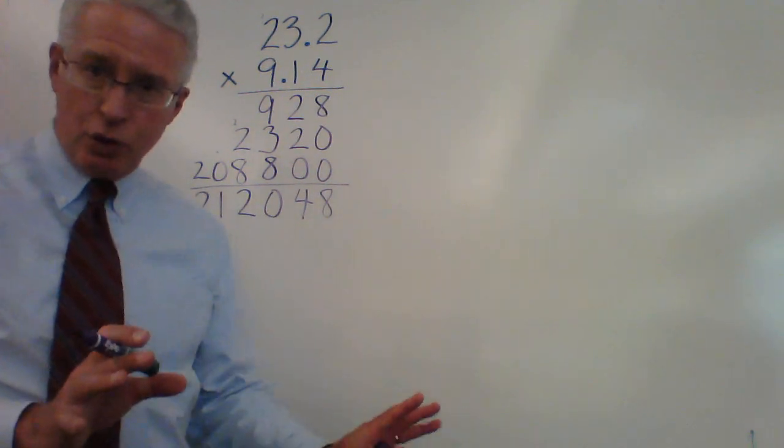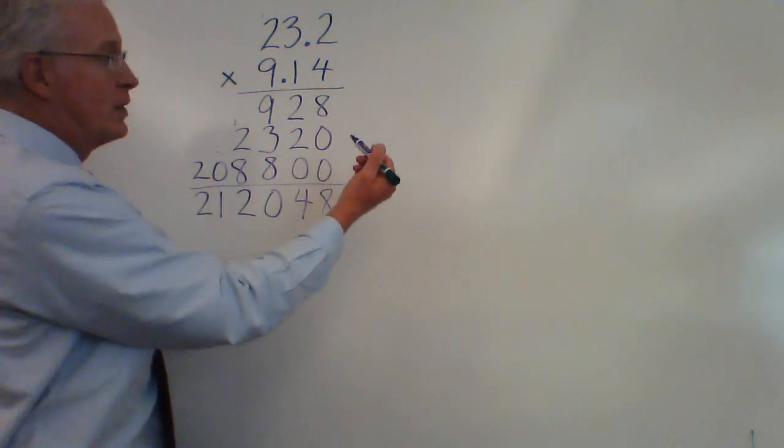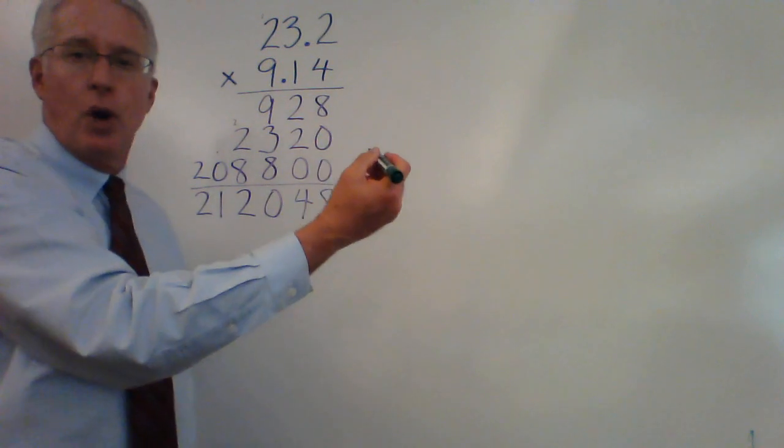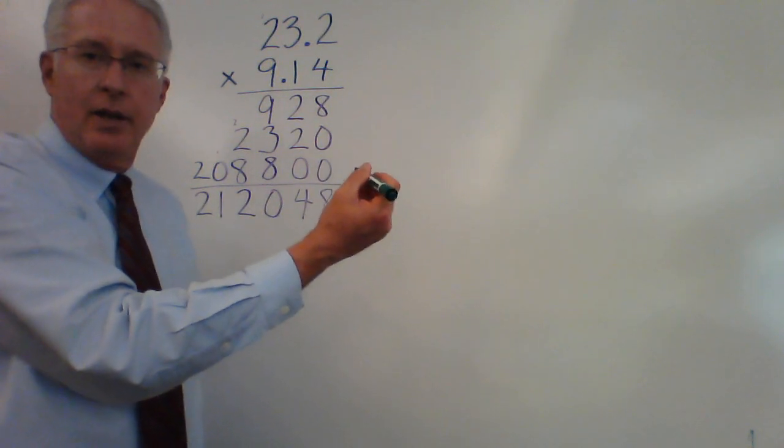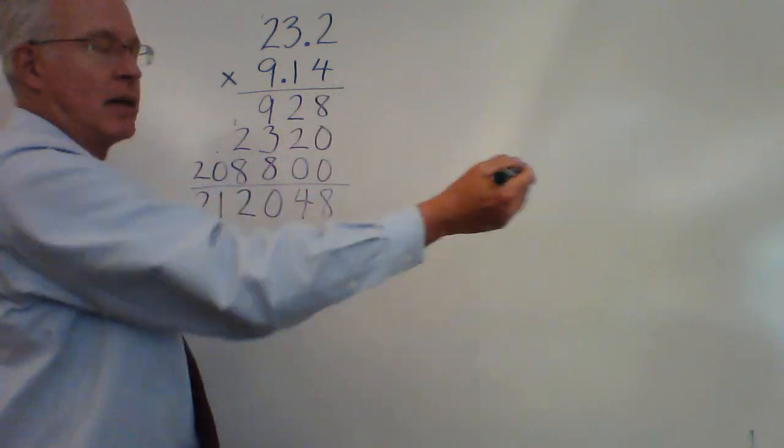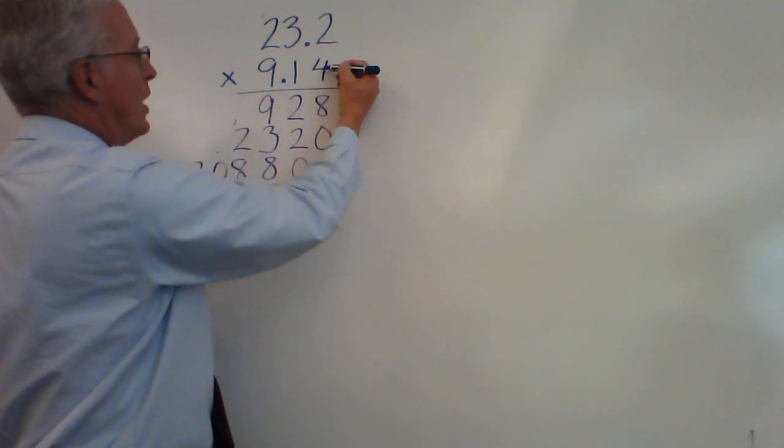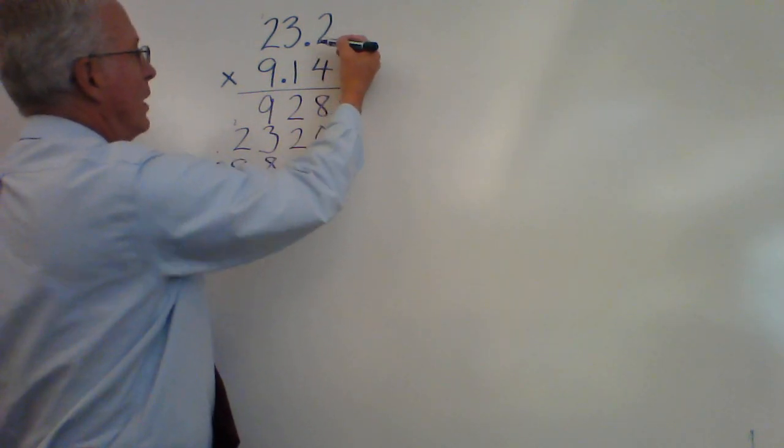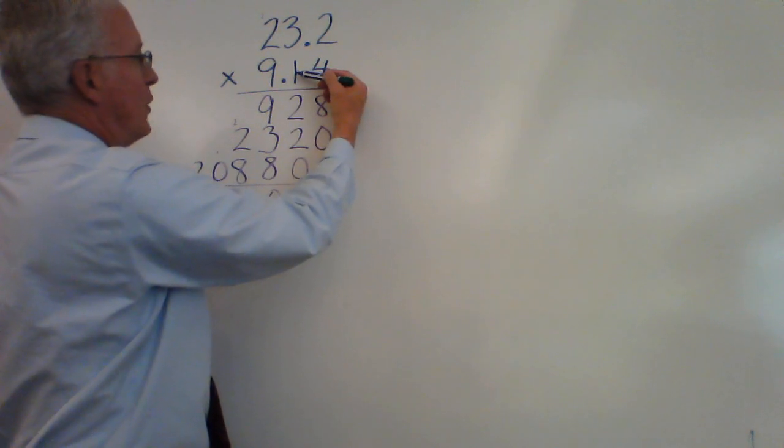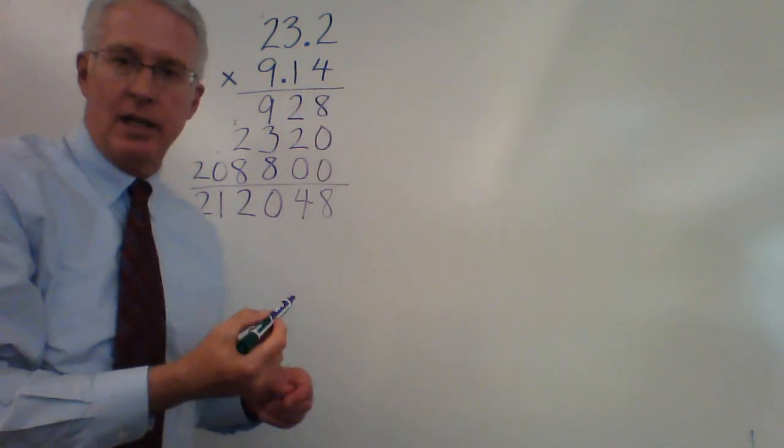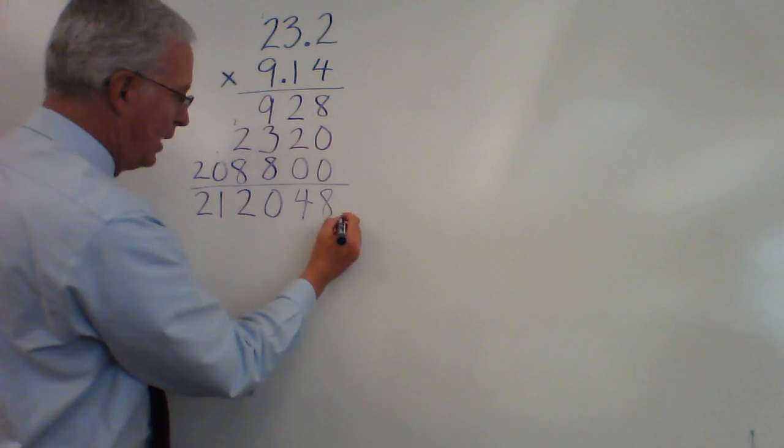So we can't be hasty with our finished product until we check for our decimal points. Now here's the trick, and it works every time and it's super simple. We simply go up here and we count the total number of digits that are behind the decimal point. The 2 is behind the decimal point, the 4 is and the 1 is. So 1, 2, 3.